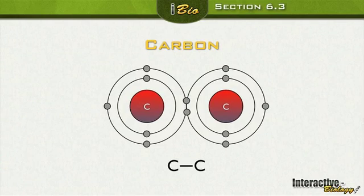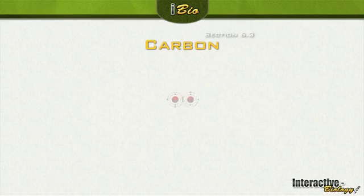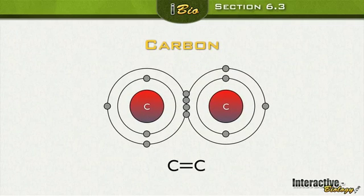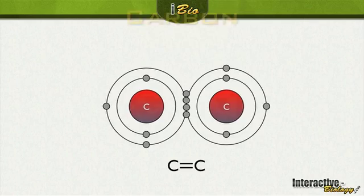Here we have an illustration — this is a single bond, where each atom shares one electron. And here we have a double bond, where each atom is sharing two. Those are the two examples shown in these illustrations.